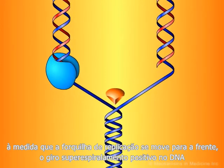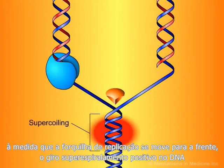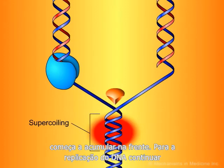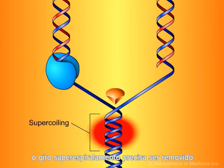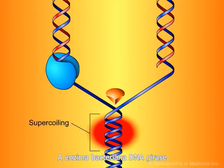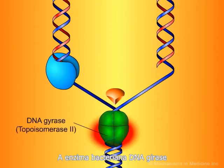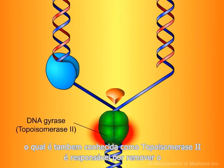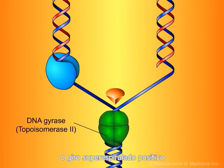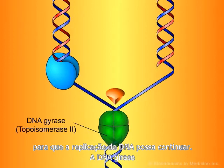As the replication forks move forward, positive superhelical twists in the DNA begin to accumulate ahead of them. In order for DNA replication to continue, these superhelical twists must be removed. The bacterial enzyme DNA gyrase, which is also known as topoisomerase 2, is responsible for removing the positive superhelical twists so that DNA replication can proceed.